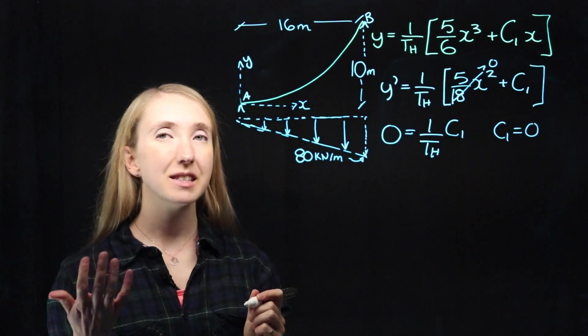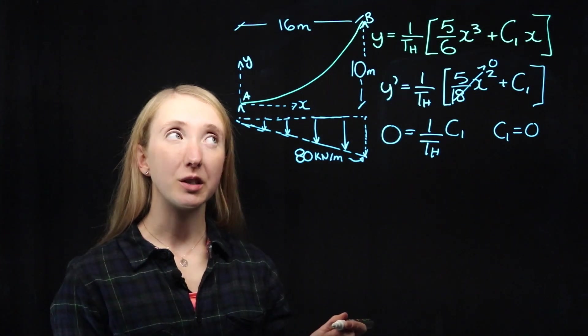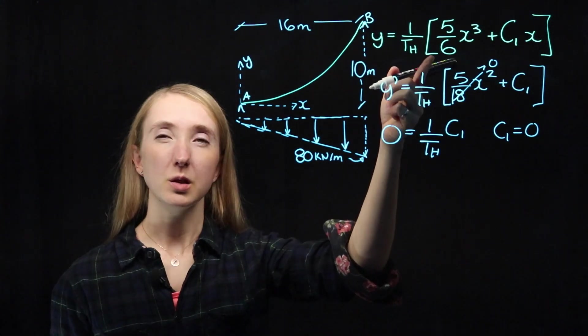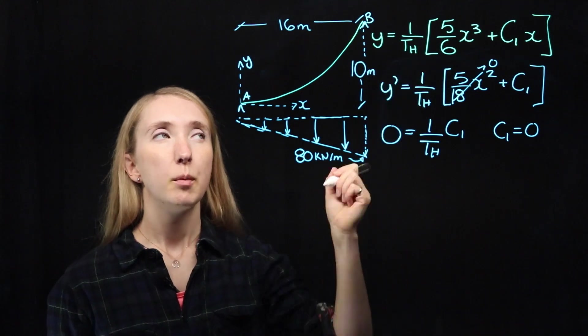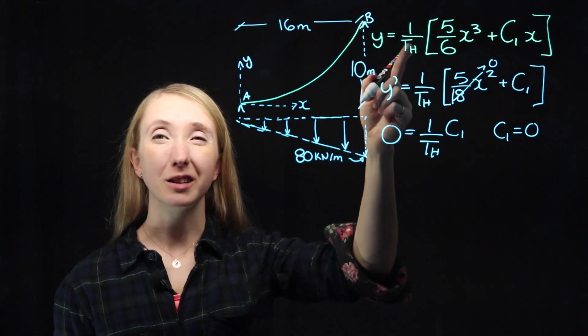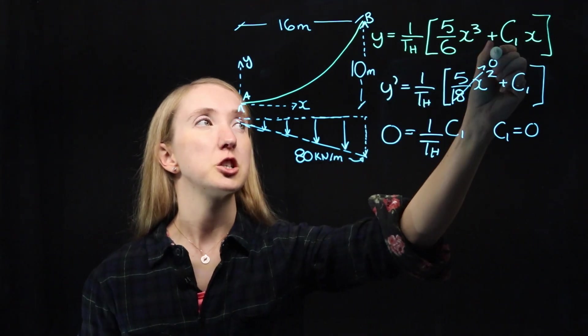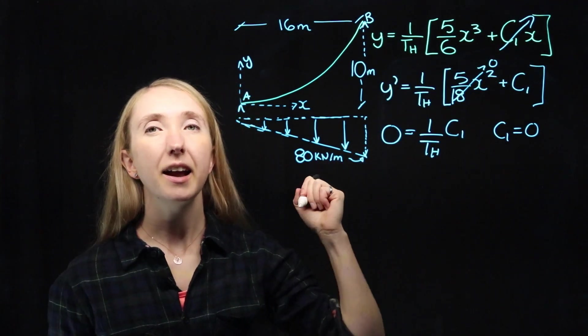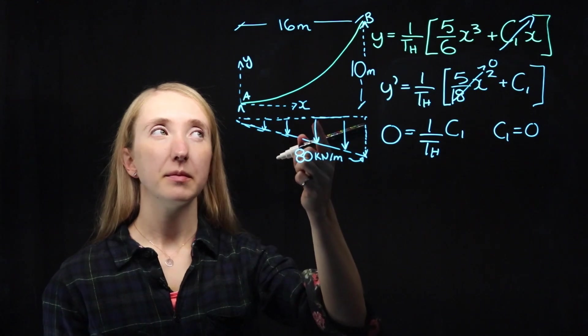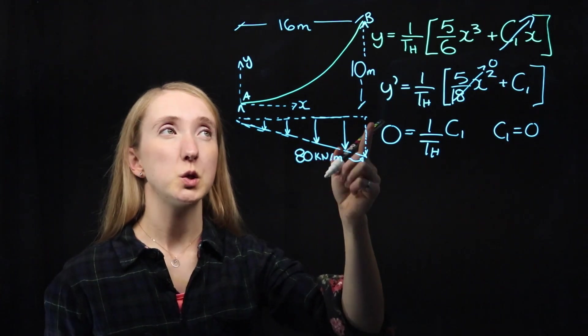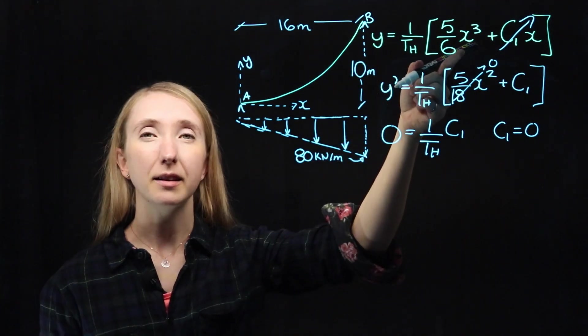And from that, we know that c1 must equal zero. Now we found c1 and c2 are both zero, so we're pretty close to our final shape equation, but we're still missing our horizontal tension, TH. Now using this equation, is there any point on our system that we have known values for both our y and x?